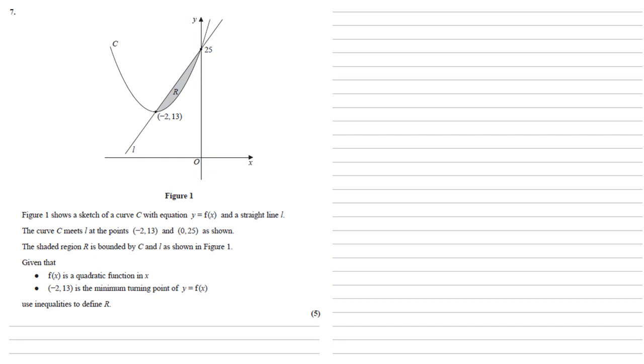The shaded region R is bounded by C and L as shown in Figure 1. We're given that f of x is a quadratic function in x and minus 2, 13 is the minimum turning point of y equals f of x.